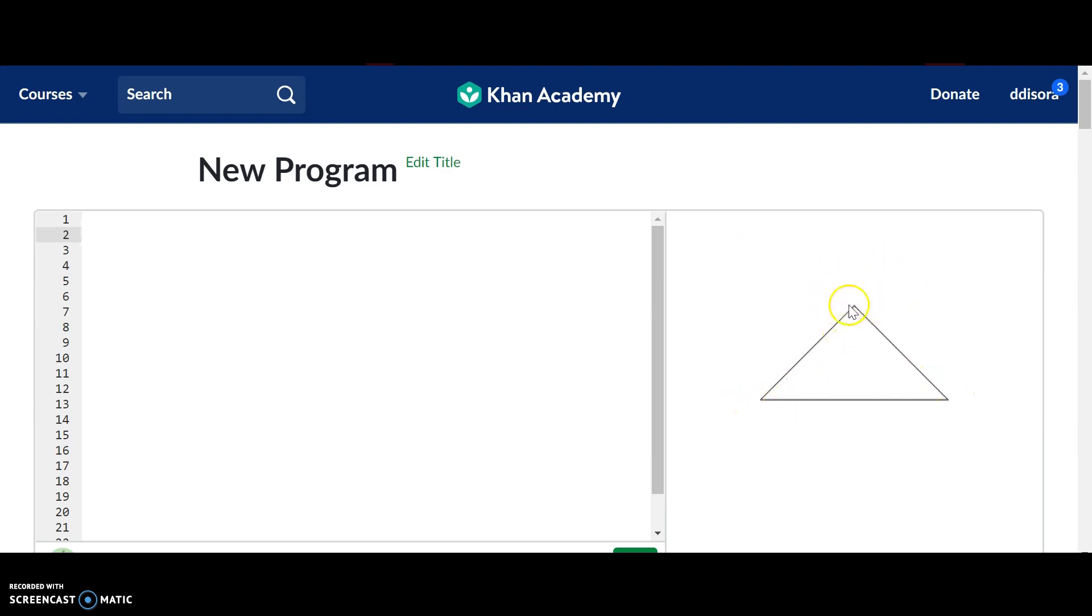So I'm going to call this top point right here X1, Y1. Over here, we're going to call this X2, Y2. And then over here, X3, Y3. Okay, so what our tag will be is this triangle. And put in my parentheses.